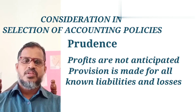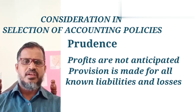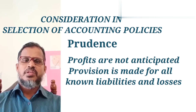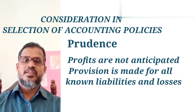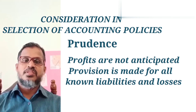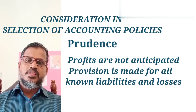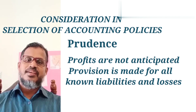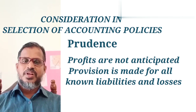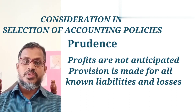Under prudence, if we know a loss is likely, we need to maintain a provision for it. For example, if we know that a debtor may not pay, we have to maintain a provision for that loss. We should not anticipate income in our accounting. These are the considerations for selecting an accounting policy.